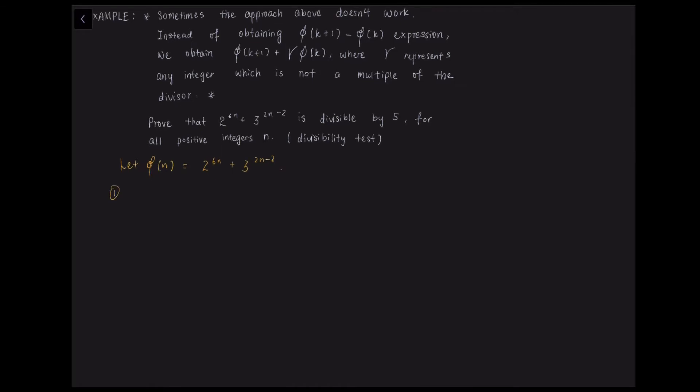Then we move on to the first step, which is the proposition. So phi n is divisible by 5 for some positive integer n.